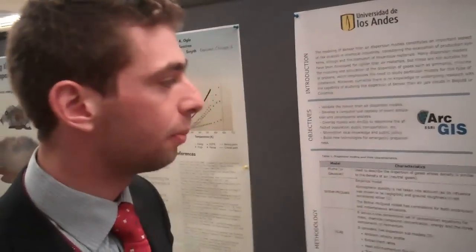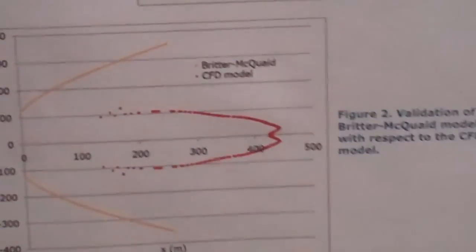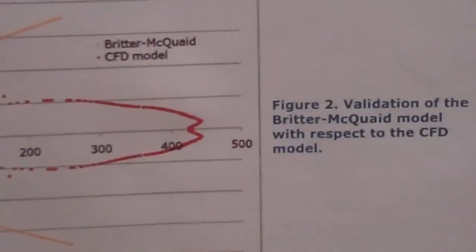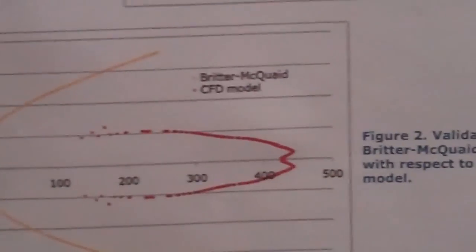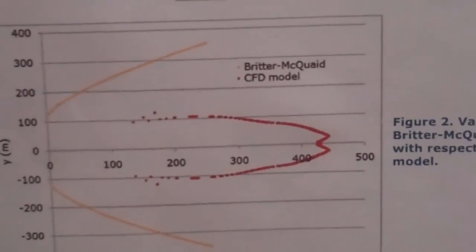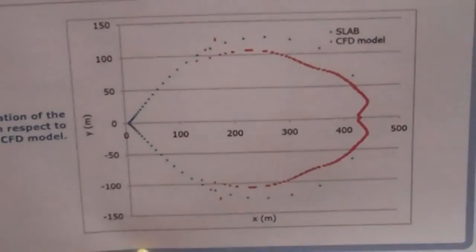Next, we have the Briden-McQuaid model. The Briden-McQuaid model overestimated our results a bit, but the advantage is that it's very simple — a simplification of the scenario requiring a very low number of parameters. It only needs wind velocity and the density of the gas and of the air. Finally, we have the SLAB model, which speaks for itself — it has the best results with respect to the CFD model.